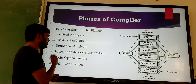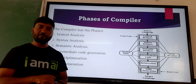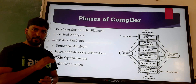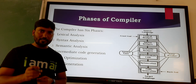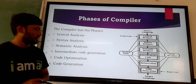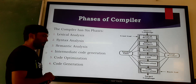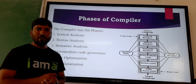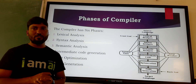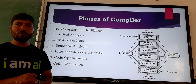The fourth phase of the compiler is intermediate code generation, in which it takes the semantic tree as input and generates the three address code. The fifth phase of the compiler is code optimization, which takes the three address code as input and generates the optimized code.